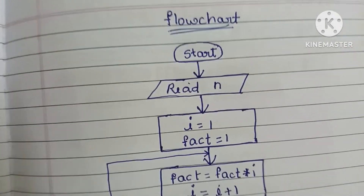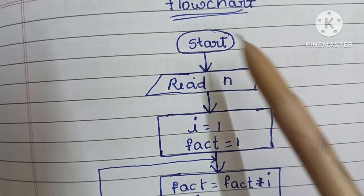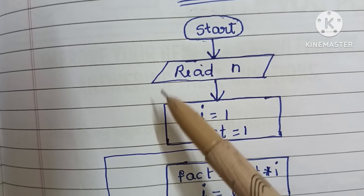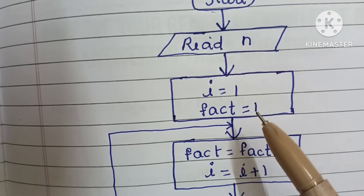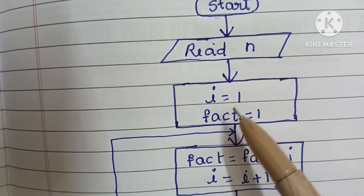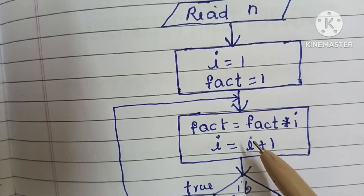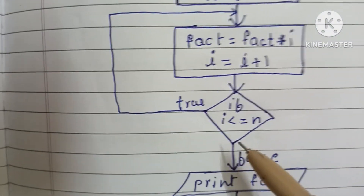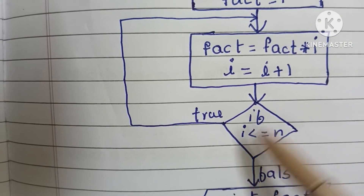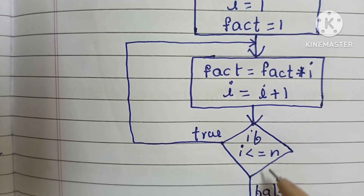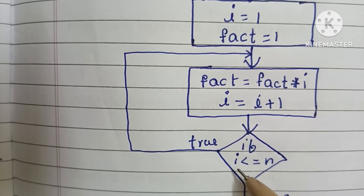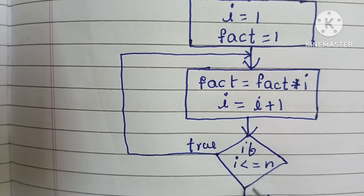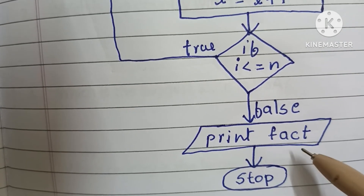This is the flowchart to find the factorial of a number. It starts with the start statement in an oval shape. Next, read n in a parallelogram shape. Then declaration in a rectangle: i equal to 1, fact equal to 1. Then calculation in a rectangle: fact equal to fact into i, i equal to i plus 1. Then check i less than or equal to n in a diamond shape — if true go back to calculation, if false print the fact value.